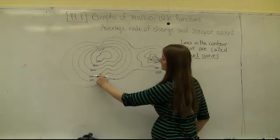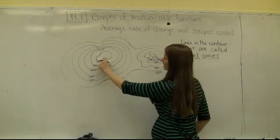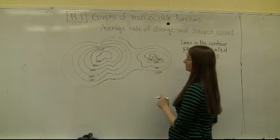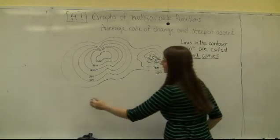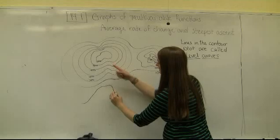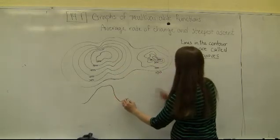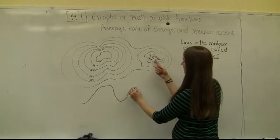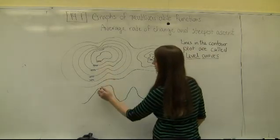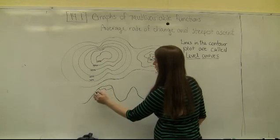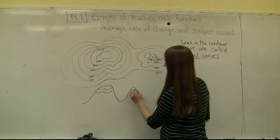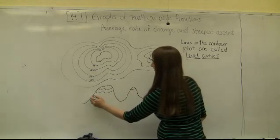If I try to visualize what this contour plot is telling me, the heights get higher and higher as I go in this direction, like a mountainside that has a peak up here at 600 and then a smaller peak over here at 500.